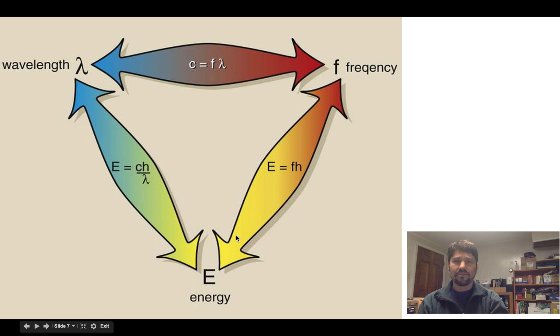So that leads us to this triangle of formulas. Energy equals frequency times Planck's constant, or energy equals speed of light times Planck's constant over wavelength. And if we have a wavelength, we can always calculate the frequency, and if we have the frequency, we can always calculate the wavelength.